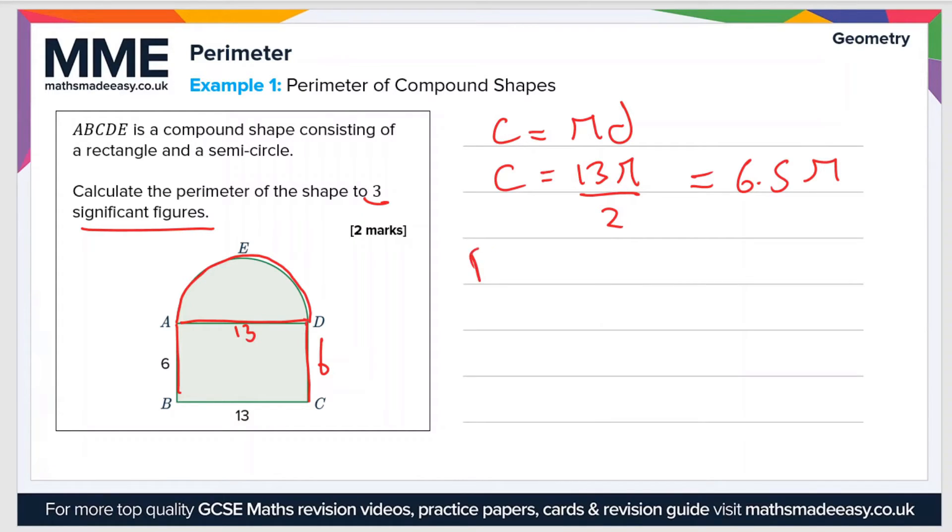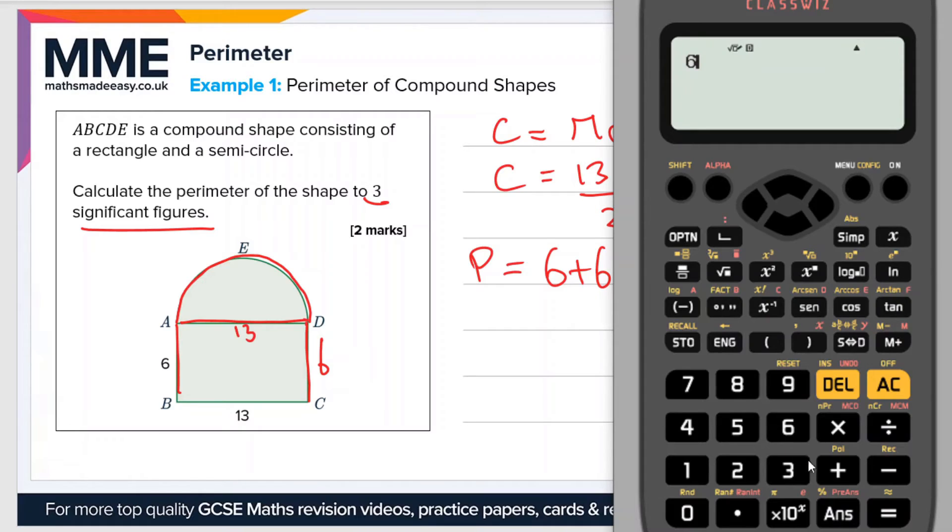Then if we want to find the perimeter, we just add all of the side lengths together. So the perimeter is 6 plus 6 plus 13 plus 6.5 pi. So let's plug all of that into the calculator: 6 plus 6 plus 13 plus 6.5 times pi. That gives us a value of 45.4.